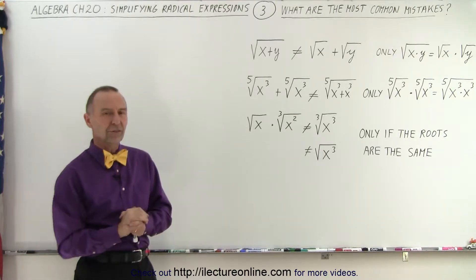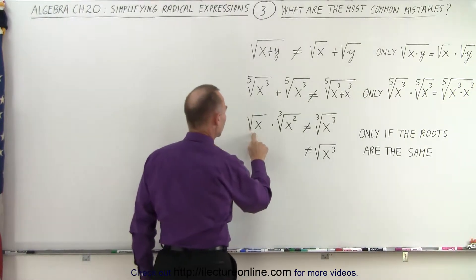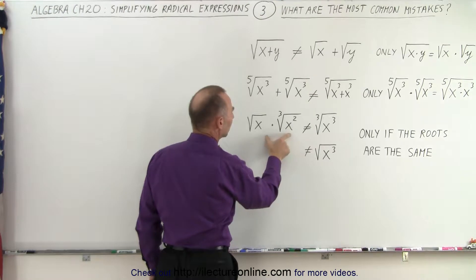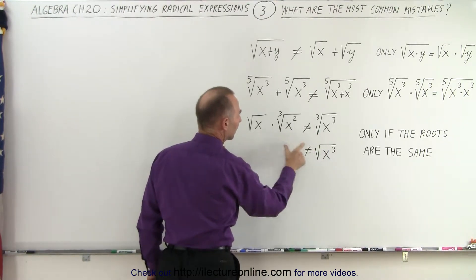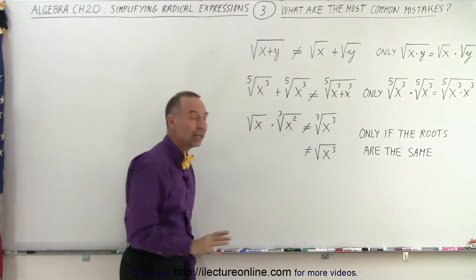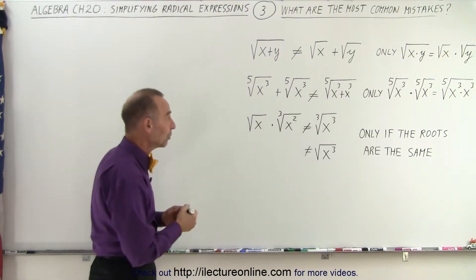What if the roots are not the same? For example, the square root of x times the cube root of x squared. Can we combine them? The answer is no. If the roots are not the same, we cannot do it.